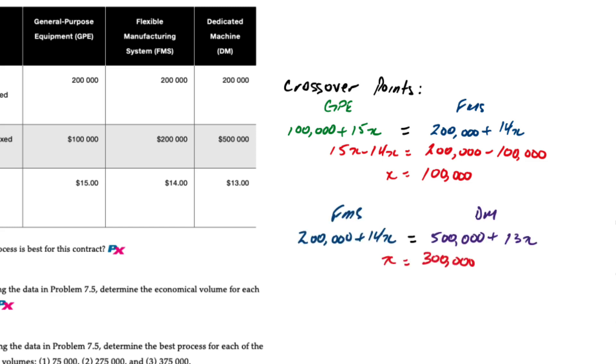Then we'll do the same by setting FMS equal to DM. So 200,000 plus 14x is equal to 500,000 plus 13x, and if we solve for x we get 300,000 units.